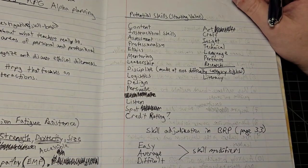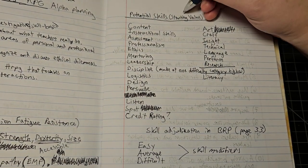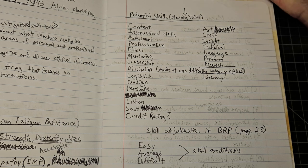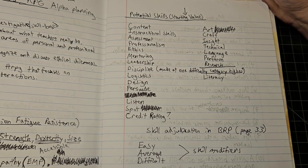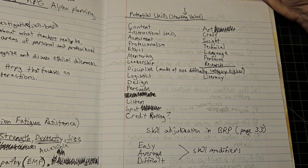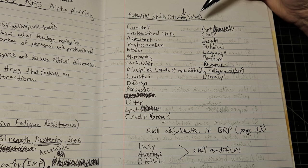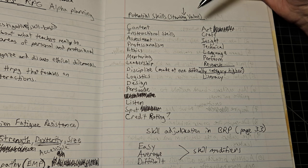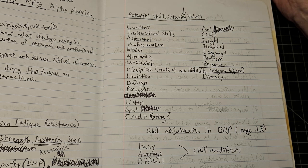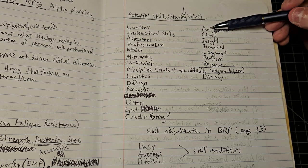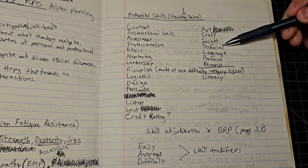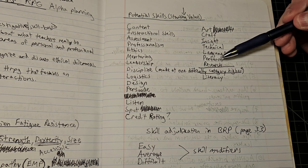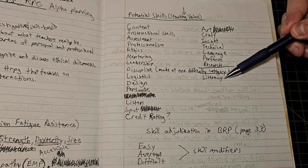Now what about potential skills? I haven't done starting values for these yet. Once again, this is like an alpha version of a role-playing game, but I view these as the core skills that are present in this game. Some of these are drawn directly from the BRP rule set, Basic Role-Playing, such as art, craft, insight, technical, language, perform, research, literacy.